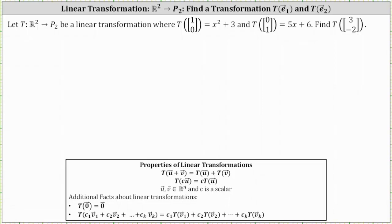Let's begin by writing the vector (3, negative 2) as a linear combination of vectors we know about, which are the standard basis vectors (1, 0) and (0, 1). The vector (3, negative 2) is equal to three times the vector (1, 0) minus two times the vector (0, 1).